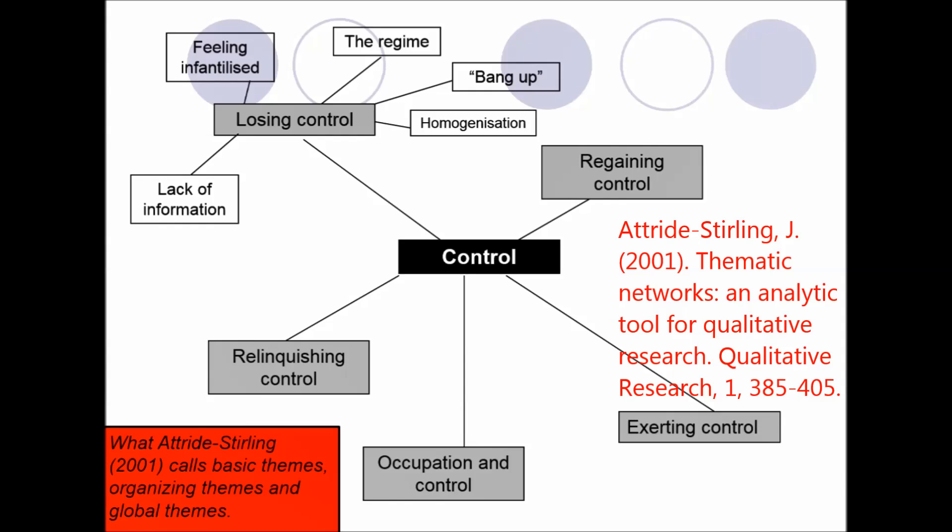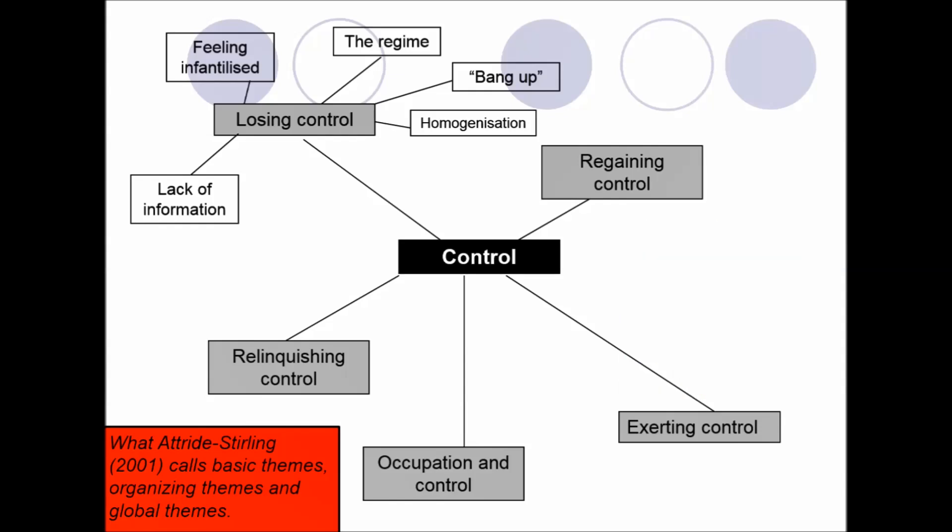Now Attride-Stirling refers to basic themes, organizing themes, and global themes. And again I've used my data to try to illustrate what that looks like. So you remember the theme that was developed early in this presentation called bang up and how that related to prisoners being behind their prison cell and feeling a kind of lack of control. Within my data there were other themes that related to this sense of prisoners losing control.